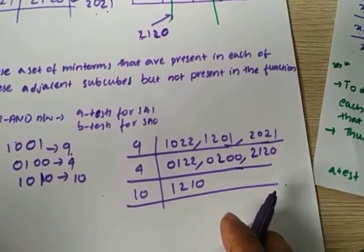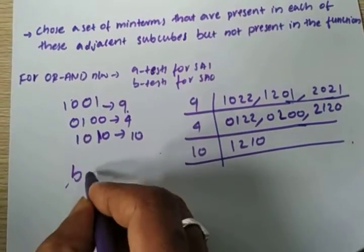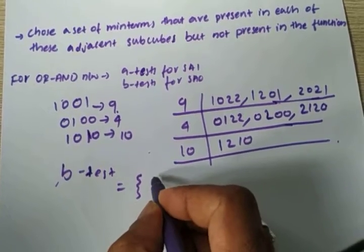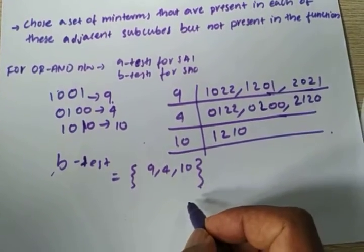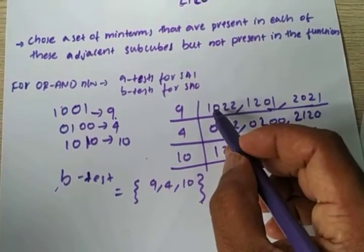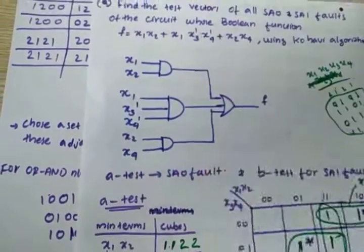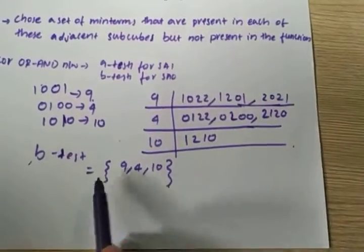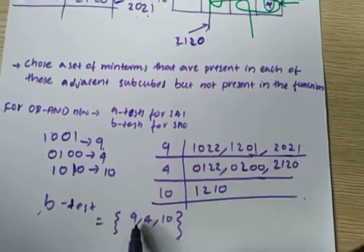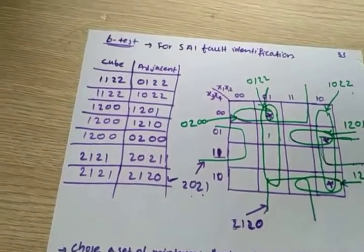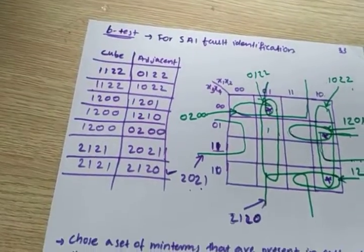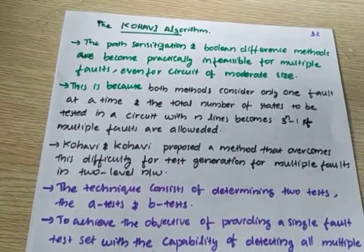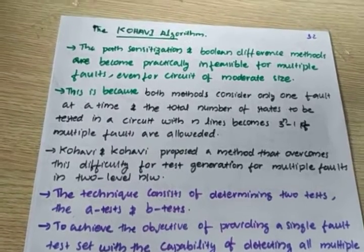So for our B-test, the sub-cubes give us minterms 9, 4, and 10. These are the corresponding test vectors you can give to the circuit in order to find out the stuck-at-one fault. This is about the B-test and this is the PODEM algorithm — a very important algorithm. University questions repeatedly ask about PODEM algorithm, so this is important.